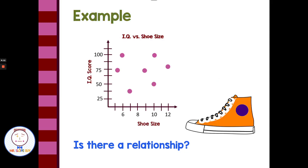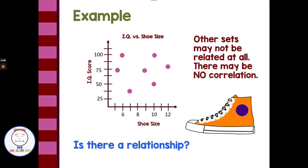If we graph something that's not related, it's just going to look random. We have a scatterplot showing the relationship between shoe size and IQ. IQ is just an intelligence test. Just as you would predict, there's no relationship between people's foot size and their intelligence, so it just looks like a bunch of random dots. For no correlation, you can see random dots over the entire scatterplot. We don't see a flow of points going upward or downward from left to right, which tells us there's just no correlation, no relationship.